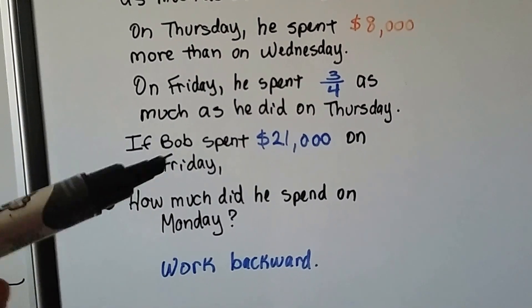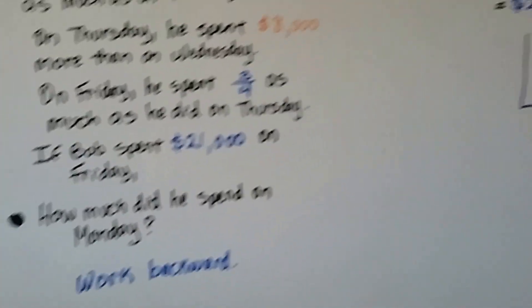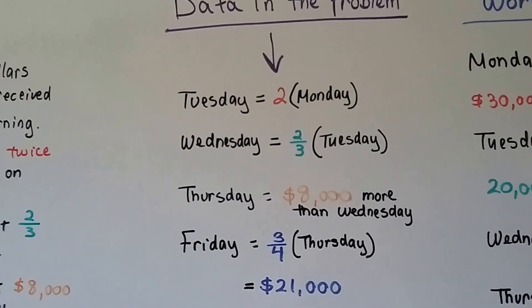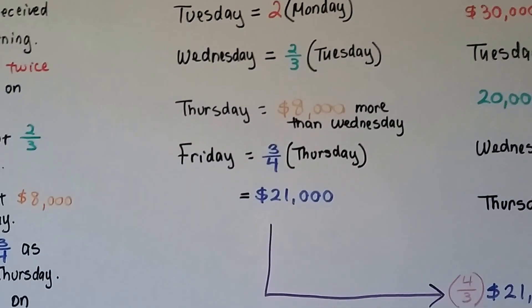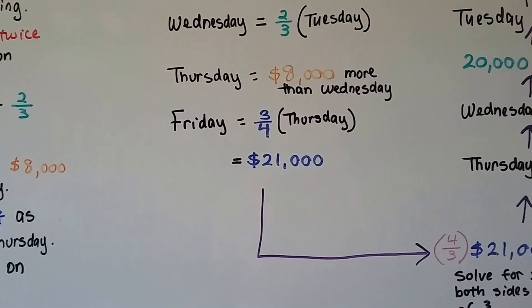Wow. So we're going to start with Friday and work our way back to get to Monday. So here's our information. Tuesday was twice as much as Monday. Wednesday was two-thirds of Tuesday. Thursday was 8,000 more than Wednesday. And Friday was three-fourths of Thursday, which equals 21,000.